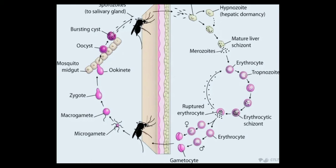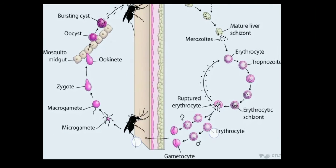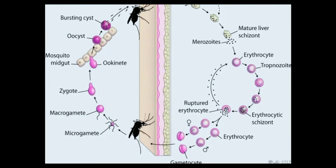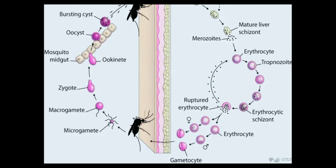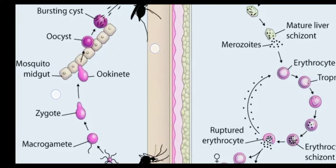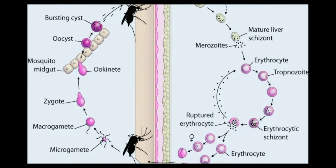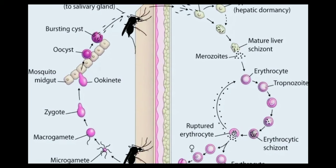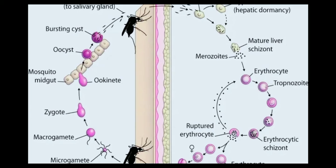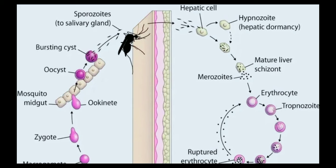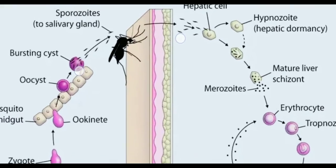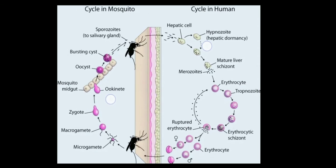Male and female gametocytes form. When a mosquito bites an infected person, it sucks up the blood including gametocytes into its stomach, where the sexual life cycle starts. Microgametes and macrogametes are formed from the gametocytes, fusion occurs, and a zygote is formed. A motile structure called ookinete forms, invades the stomach wall, and forms an oocyst, which produces sporozoites. The cyst bursts, sporozoites are released and carried to the salivary gland, and the whole cycle repeats with the next bite.